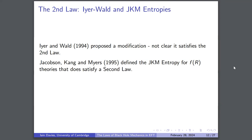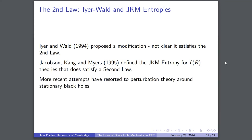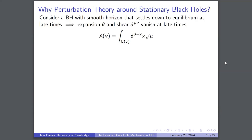What have people done to prove the second law? Iyer and Wald in 1994 proposed a modification to the Wald entropy, sometimes known as the Iyer-Wald entropy, but it's also not clear that it satisfies the second law for specific beyond-GR theories such as f(R) theories — Lagrangians that only depend on the Ricci scalar. Jacobson, Kang, and Myers in 1995 defined an entropy that does satisfy a second law, but only for specific Lagrangians. More recent attempts to define an entropy satisfying a second law have resorted to perturbation theory around stationary black holes.